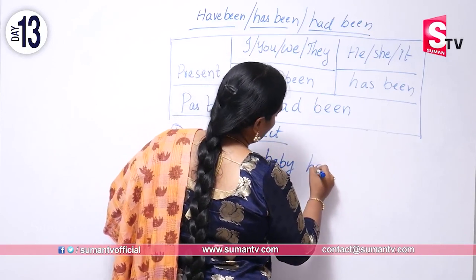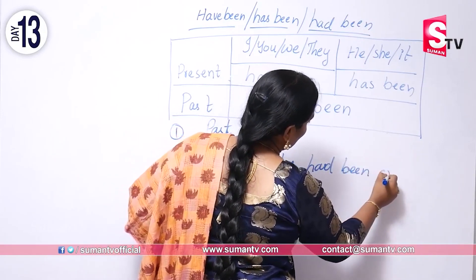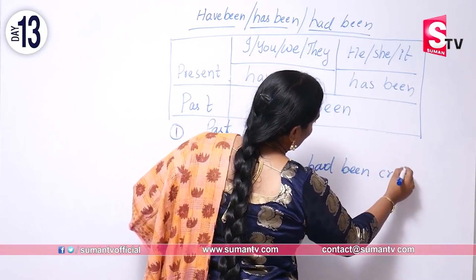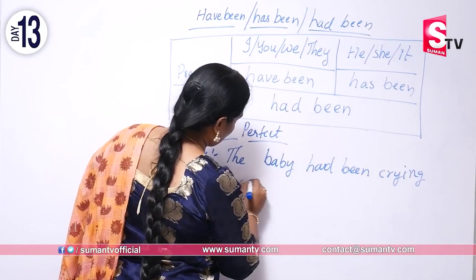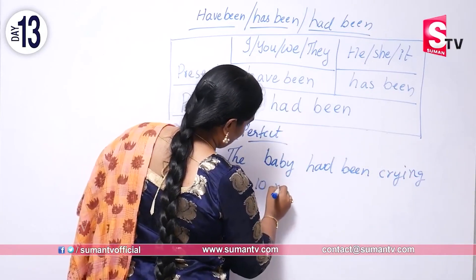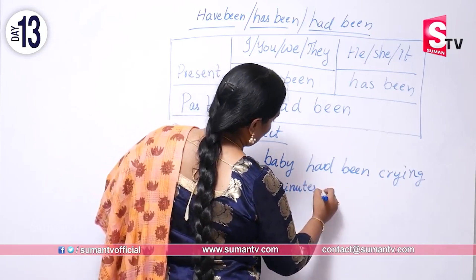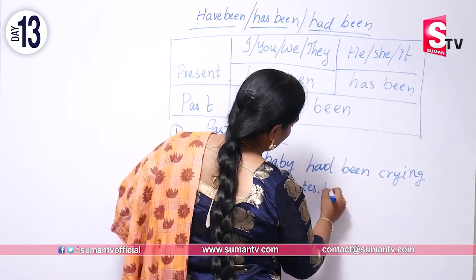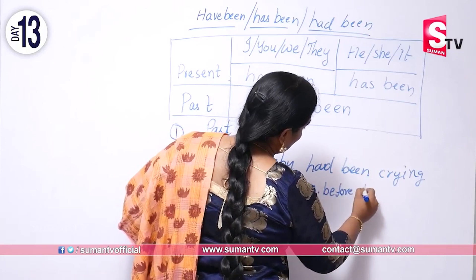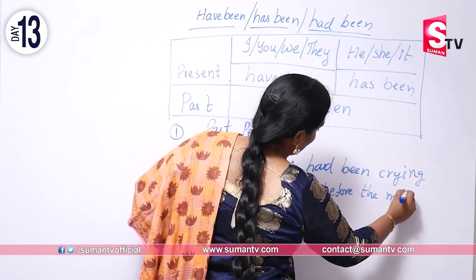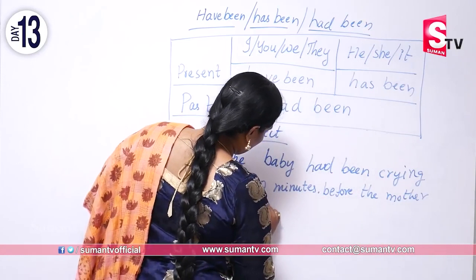Here is an example with 'had been': 'The baby had been crying for ten minutes before the mother attended her.' This shows a past action that was ongoing before another past event occurred.